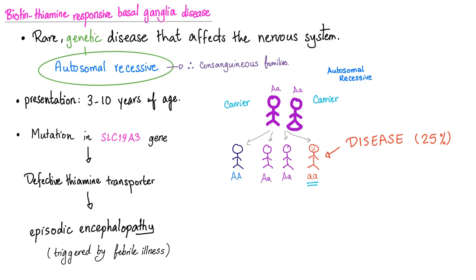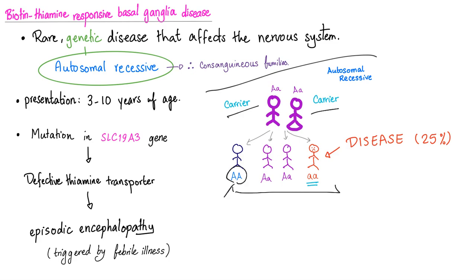Biotin-thiamine-responsive basal ganglia disease is a very rare genetic disease that affects the nervous system. It's autosomal recessive — when you hear autosomal recessive, think of consanguineous families. The typical age of presentation is 3 to 10 years. Mutation in SLC19A3 causes a defective thiamine transporter and episodic encephalopathy. Mommy and daddy are carriers; statistically, if they have four kids, one will be completely normal, two will be carriers, and one will have the disease.